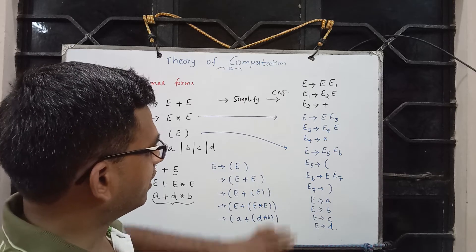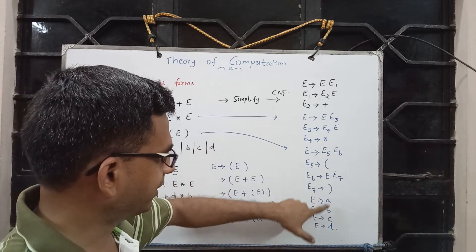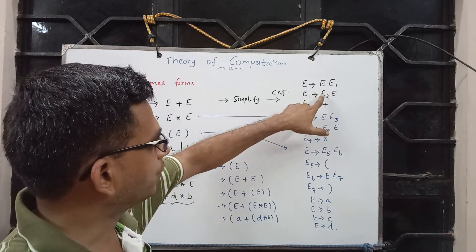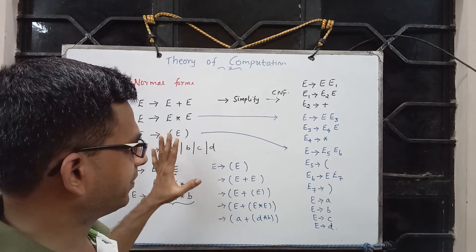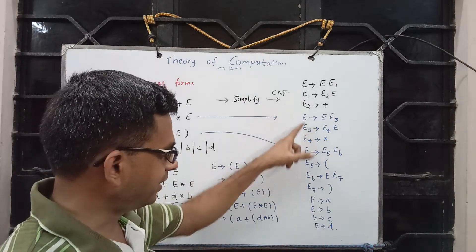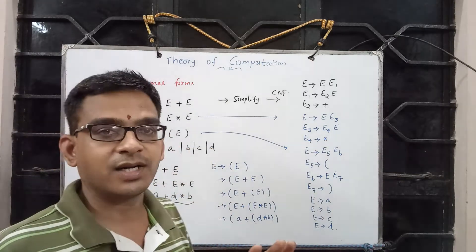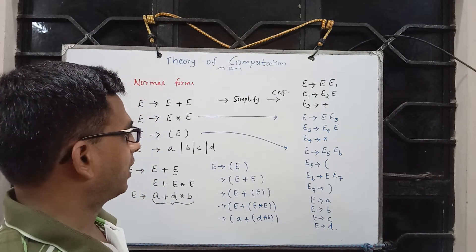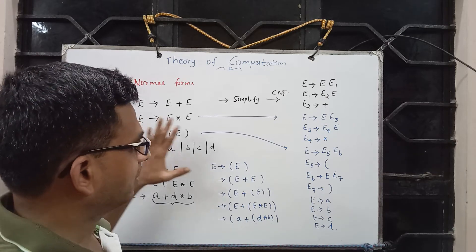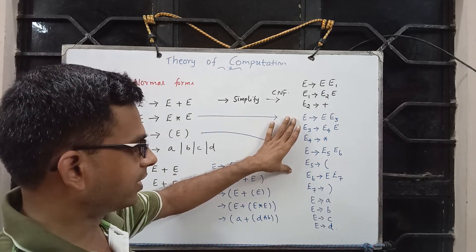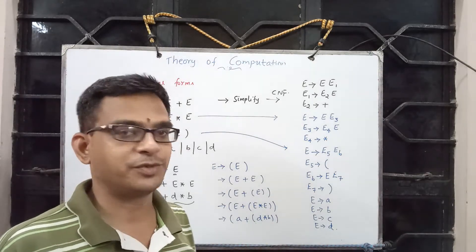Now you see that here is a grammar in which every production has exactly one terminal or two non-terminals, and this clearly respects the CNF property. Most importantly, the language accepted by this CNF grammar and the language accepted by the original are one and the same. For a grammar not accepting the empty string, one can always find an equivalent Chomsky Normal Form grammar following this procedure.